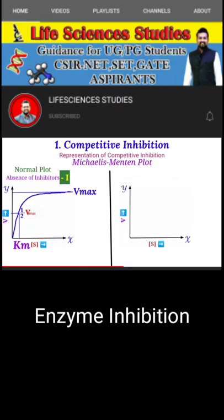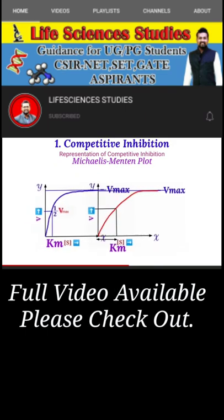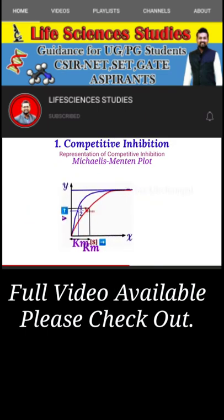When we plot the Michaelis-Menten plot in the presence of inhibitor, we will find the curve line will be somewhat shifted, which represents the change in KM value. At Vmax, in both cases—absence of inhibitor and presence of inhibitor—is the same, but the KM value has been changed.